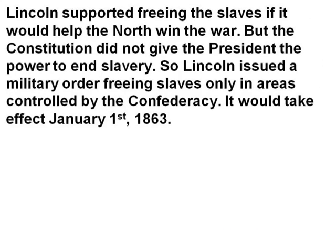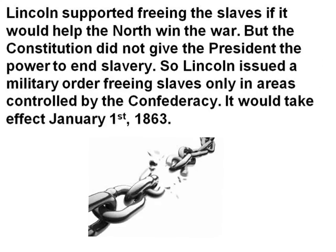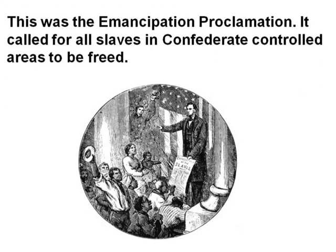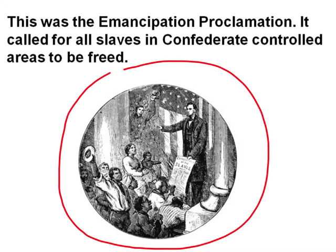Lincoln supported freeing the slaves if it would help the North win the war. But the Constitution did not give the President the power to end slavery. So Lincoln issued a military order freeing slaves only in areas controlled by the Confederacy, to take effect January 1, 1863. This was the Emancipation Proclamation. It called for all slaves in Confederate-controlled areas to be freed. Here you see a picture of Lincoln issuing his Emancipation Proclamation.